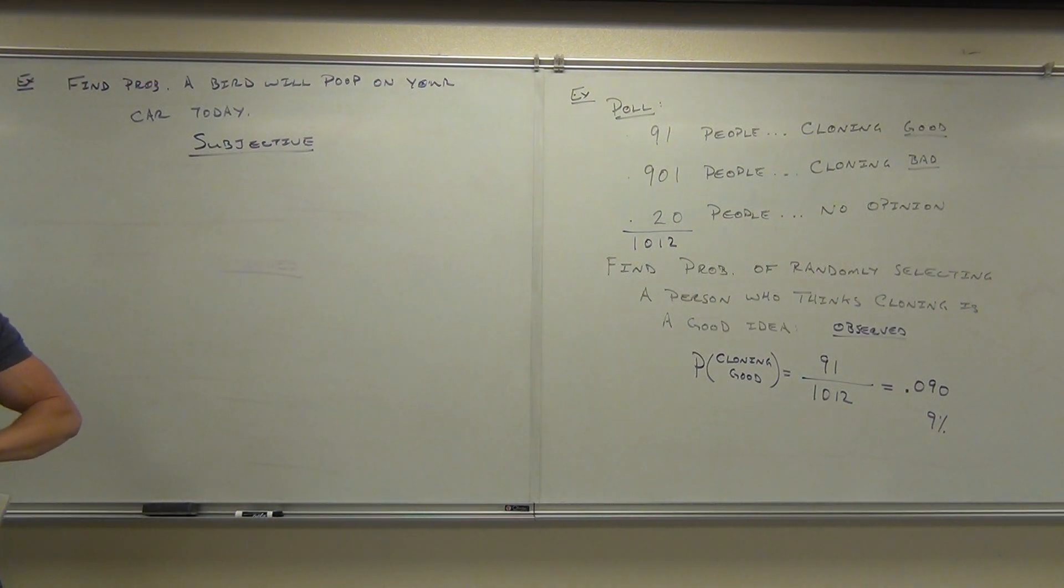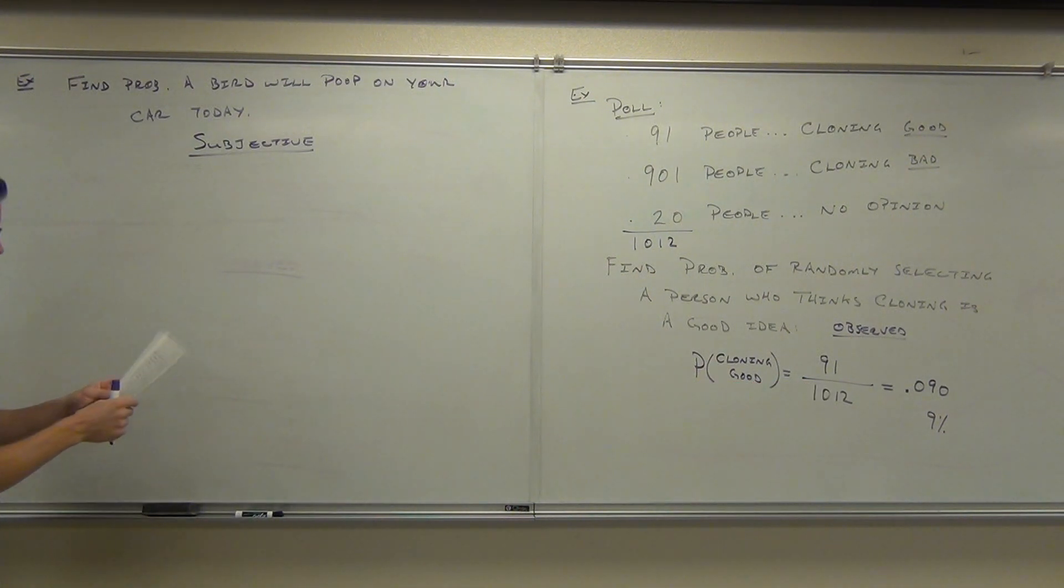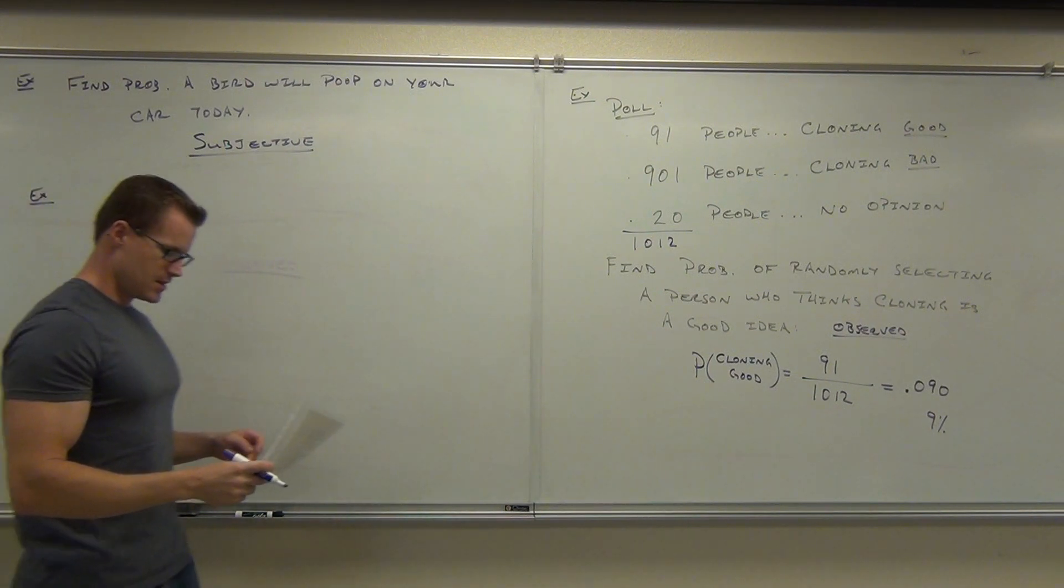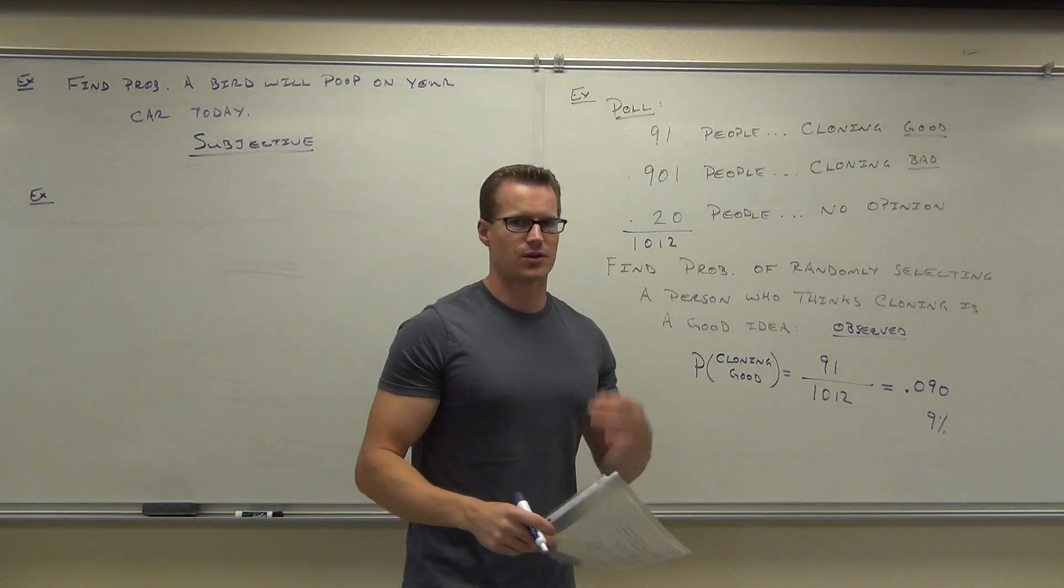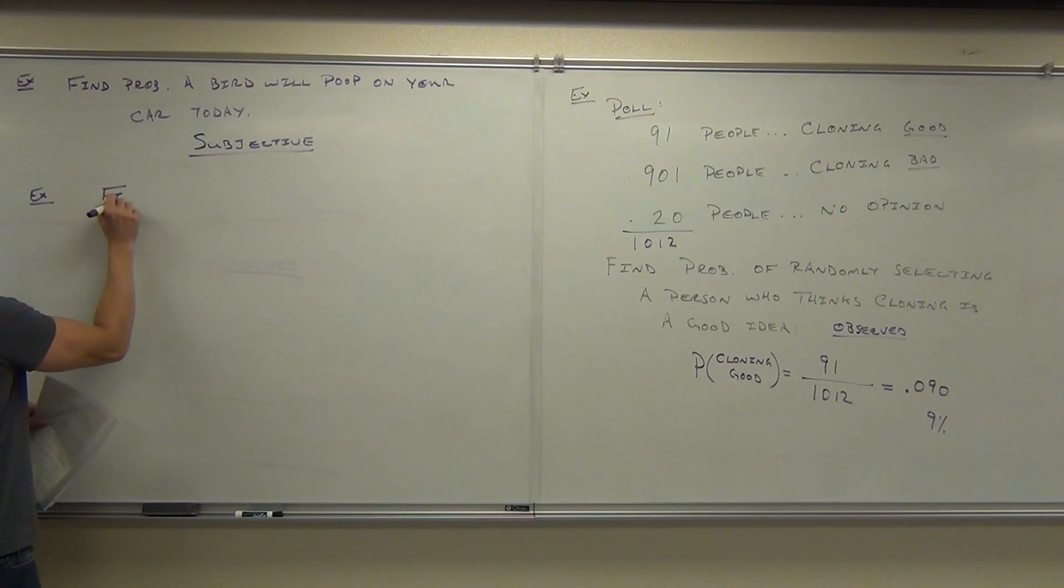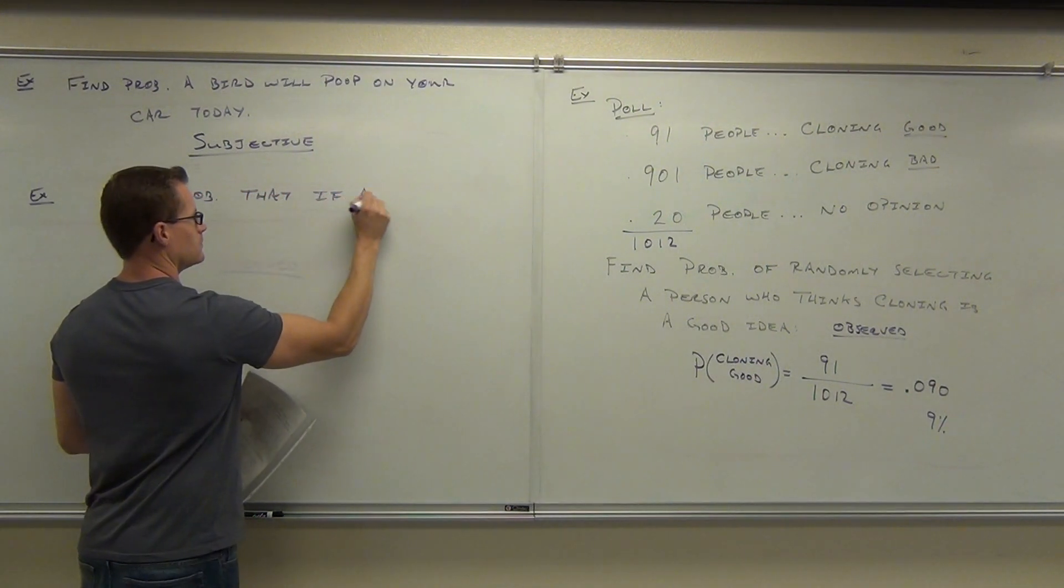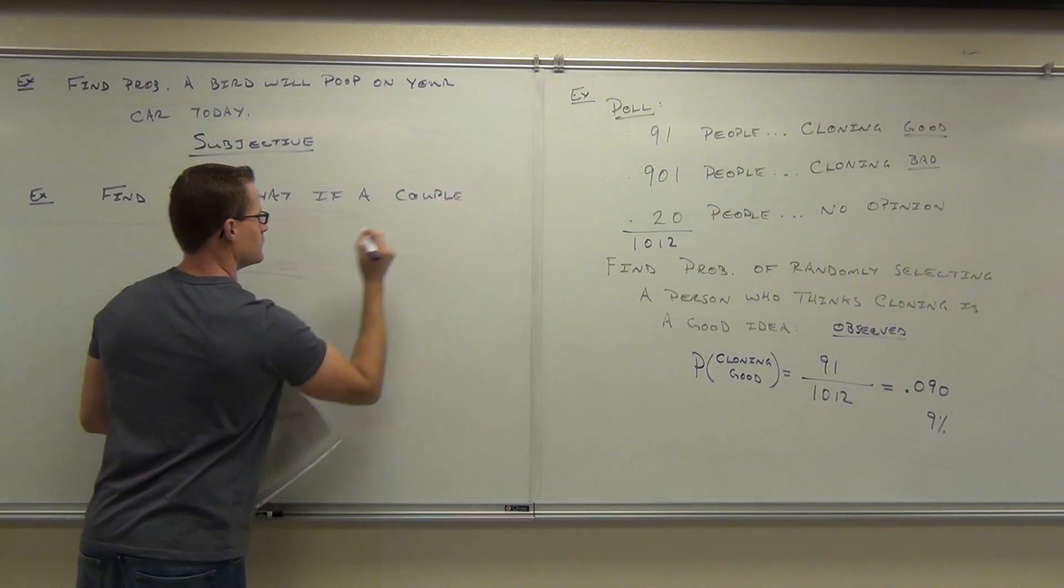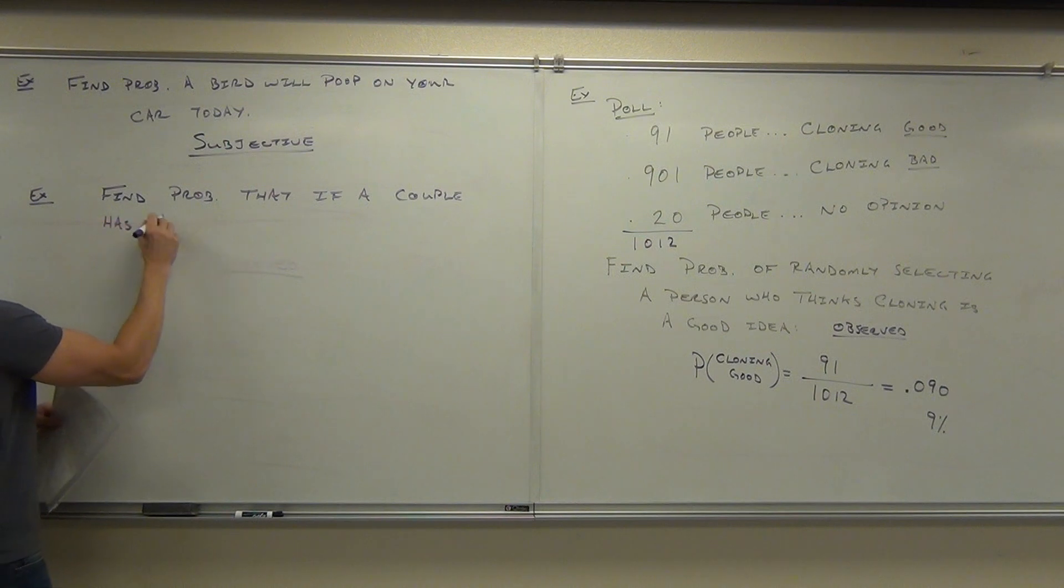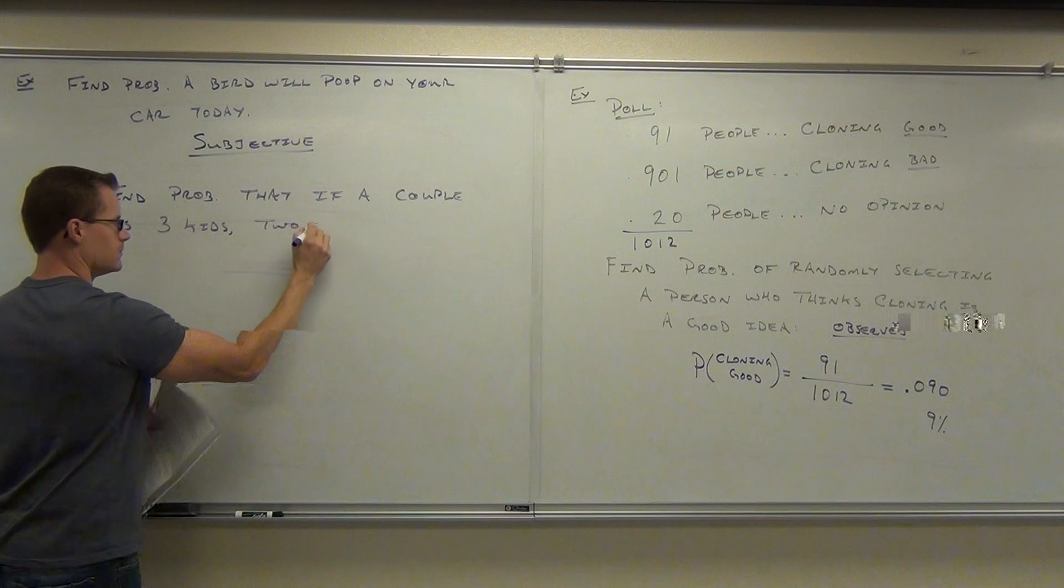Let's go ahead and do one more. I'll give you a couple notes that are important for us, and then we'll continue to talk about some complementary events and what that even means. Let's find the probability that if a couple has three kids, two of them are going to be boys.